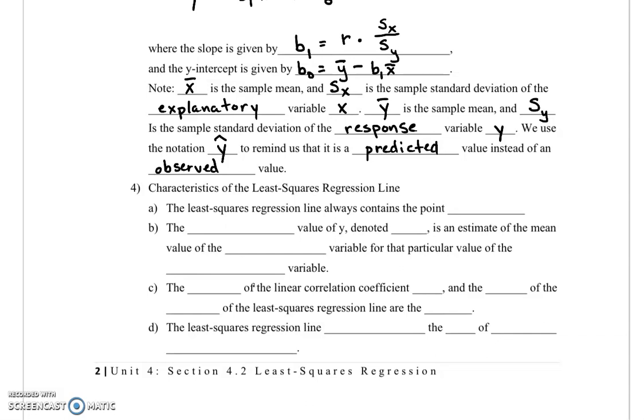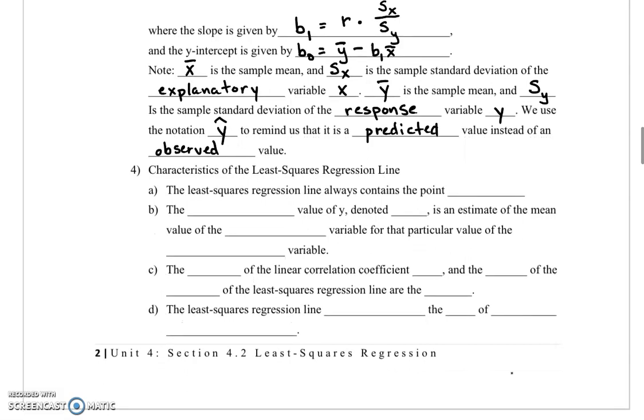Let's quickly talk about the characteristics of the least squares regression line. The first thing is that it always contains the point x bar, y bar. Also, the predicted value of y, which remember we denote y hat, is an estimate of the mean value of the response variable for a particular value of the explanatory variable.